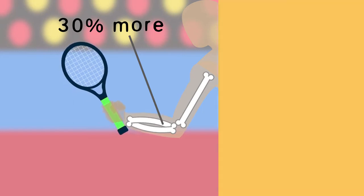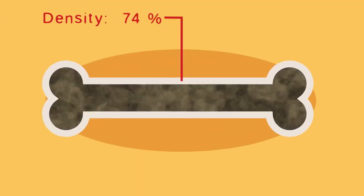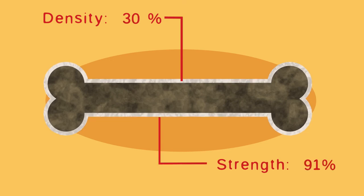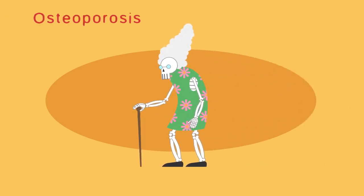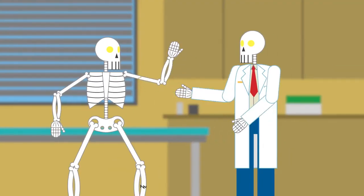As you get older, your bones lose density and become weak and brittle. This can happen faster in some people, especially women, and this is called osteoporosis. If you break a bone, you may need to see an orthopedic surgeon.